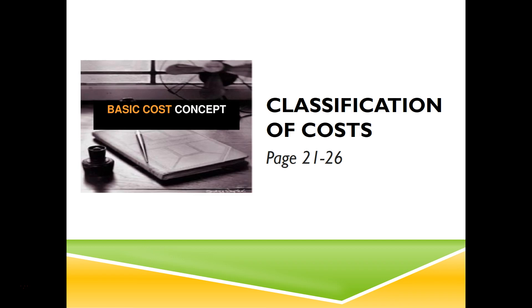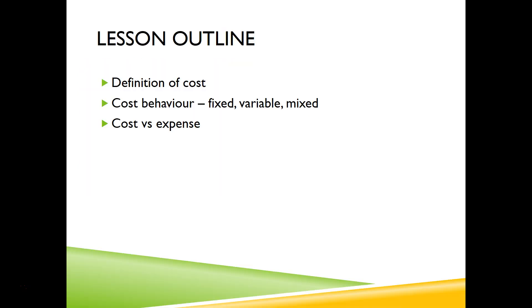This chapter or topic has two parts. If you look at the top of page 21, it is stated as classification of cost point 1, which means there is a part 2 to this topic that we'll talk about later in another class. In this topic we will examine a common method of classifying the cost of a business.